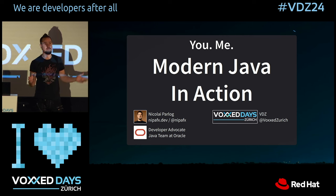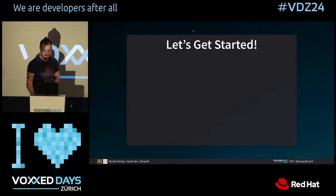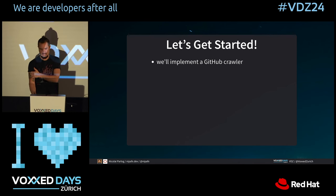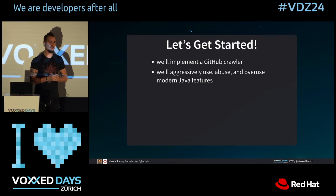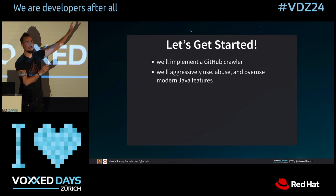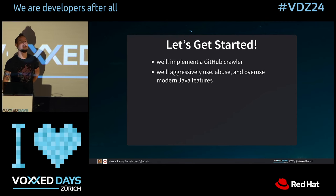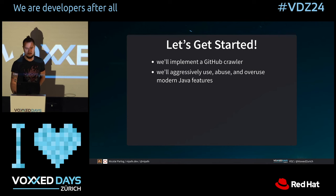We're going to take a bunch of new Java features and see what they look like when you put them into an IDE. We will implement a small GitHub crawler. We'll aggressively use, misuse, overuse, and abuse new Java features. This is not meant as something you'd do in production with your team — I just want to show you what it looks like, and then you can decide which things look good to you and which you want to follow up on.